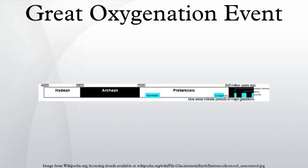Several hypotheses might explain the time lag. The tectonic trigger hypothesis proposes that the oxygen increase had to await tectonically driven changes in the Earth, including the appearance of shelf seas where reduced organic carbon could reach the sediments and be buried. The newly produced oxygen was first consumed in various chemical reactions in the oceans, primarily with iron. Evidence is found in older rocks that contain massive banded iron formations, apparently laid down as iron and oxygen first combined. Most of the planet's commercial iron ore is in these deposits.